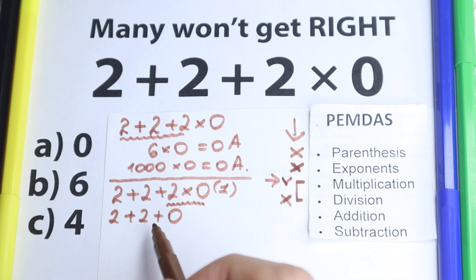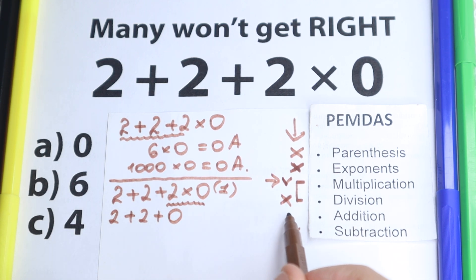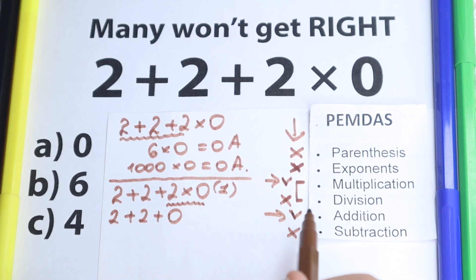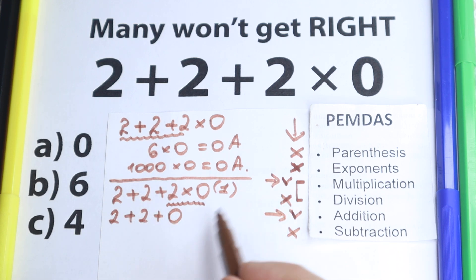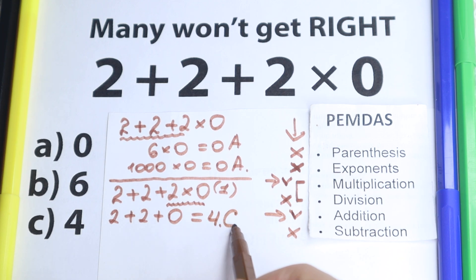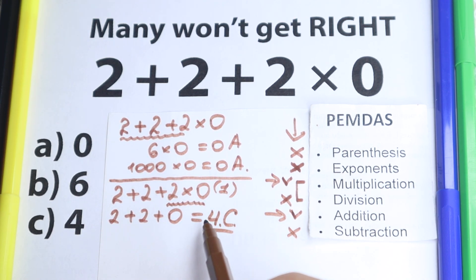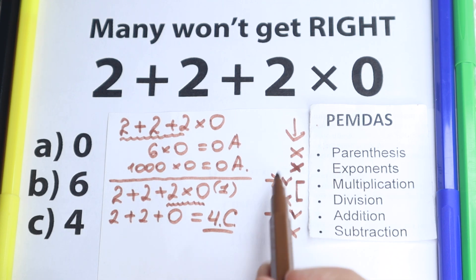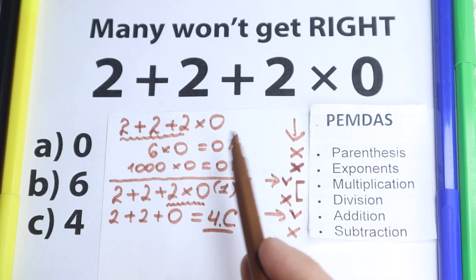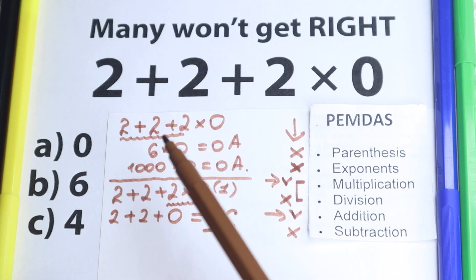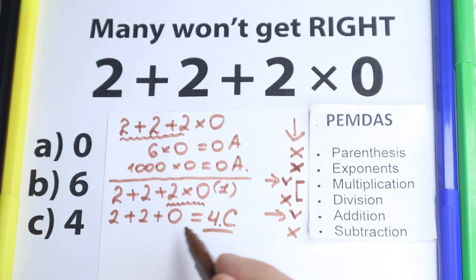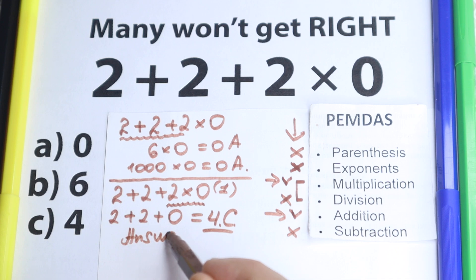Next is the addition and subtraction group. We have no subtraction, but we do have addition. So we perform: 2 plus 2 plus 0, which equals 4 — that is option C. After this explanation, we have a completely different answer. We solved it according to the correct order of operations, not doing addition before multiplication arbitrarily. The correct answer is option C.